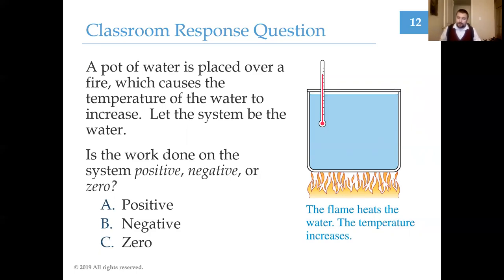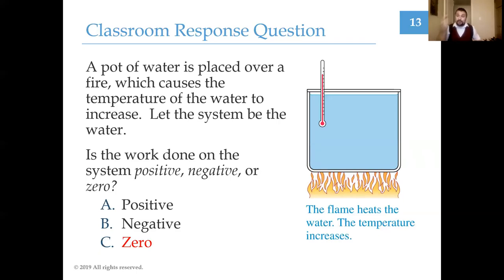We must use the strictest definition of work: a force applied to a system that causes it to displace — to move in some manner. The water being heated does not move; its center of mass does not displace. Therefore, there is zero work done on the system. But you correctly push back: the system increased its temperature, and temperature is a measure of kinetic energy. How can I change the kinetic energy within this system without doing work? We need something else in our work-energy theorem.